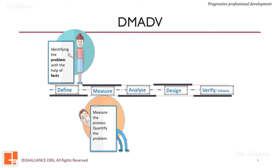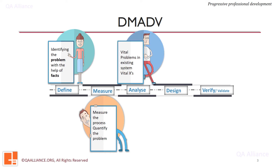As part of the Measure phase, the team analyzed the existing performance management system. They quantified the problem and, by interviewing key stakeholders, identified what the company wanted from such a system. Factors like frequency, availability, capacity, and security were identified as important. In the Analyze phase, the team identified the vital problems of the existing system and derived key requirements for the new system as an output of the Analyze phase.